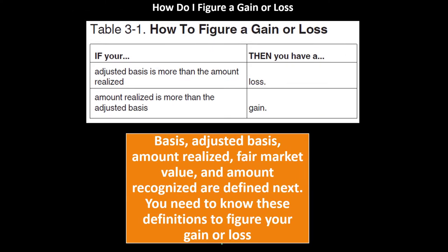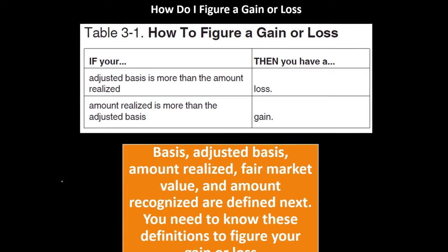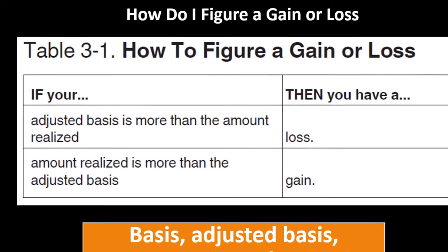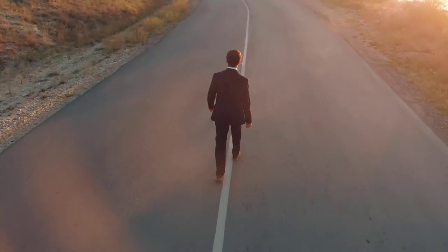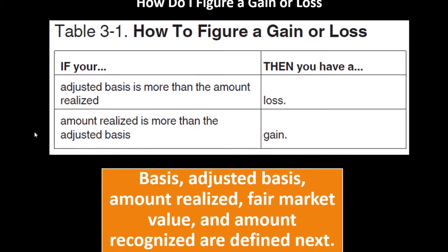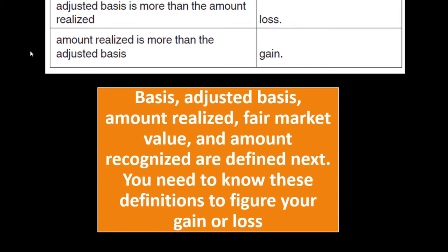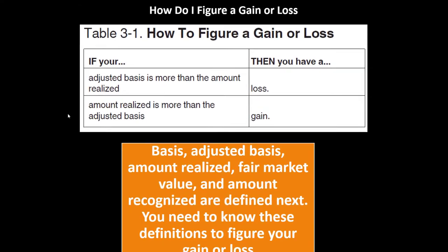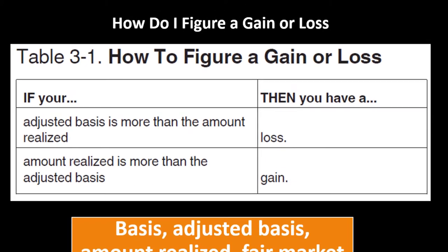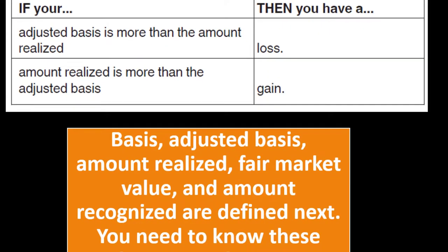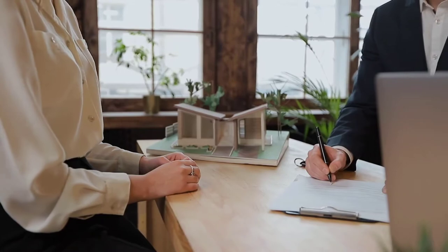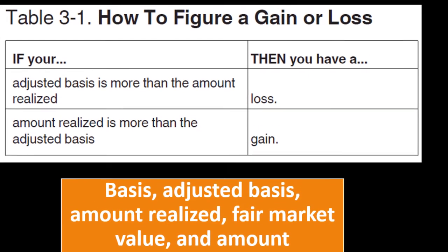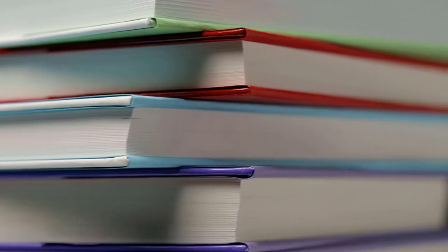How do you figure a gain or loss? If your adjusted basis is more than the amount realized, you have a loss. If the amount realized is more than the adjusted basis, you have a gain. The adjusted basis is essentially the adjusted cost — how much you purchased the asset for, adjusted by depreciation taken over its life. Since you already got the benefit of depreciation as a deduction, when you sell, your basis is reduced. You can think of it like book value but on a tax-adjusted basis, since accounting and tax depreciation methods can differ.